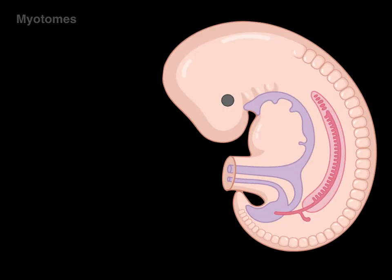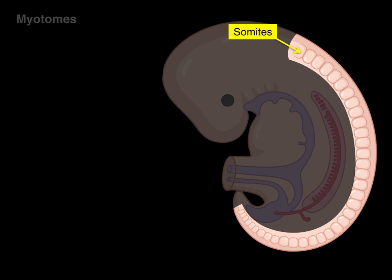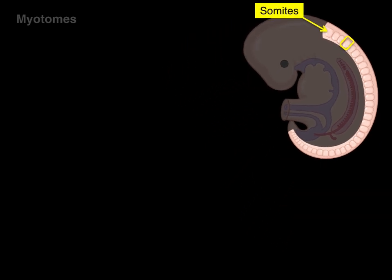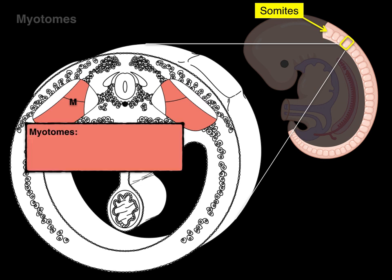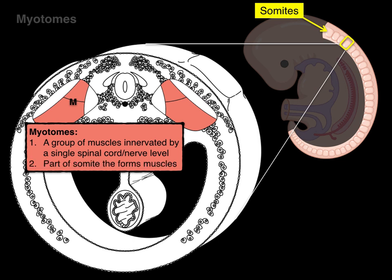So why do we care about this? Let's take a look at a lateral view of a developing embryo. We have these somites — segmental condensations of periaxial mesoderm. In cross section, each somite consists of dermatomes, myotomes, and sclerotomes. The myotomes are what give rise to the skeletal muscle that migrates out to the body at every segmental level. So myotomes are a group of muscles innervated by a single spinal cord level, but also myotomes are part of a somite that forms the skeletal muscles.